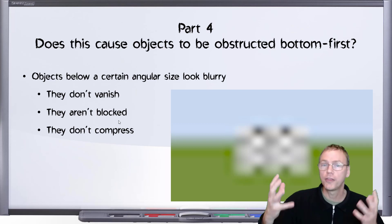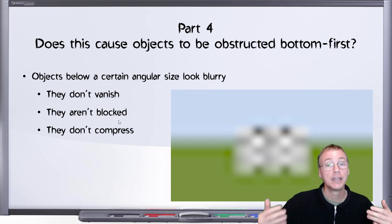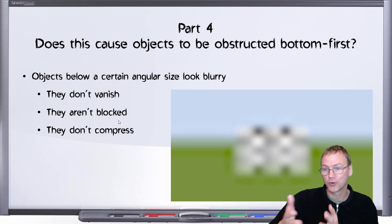They blur together with their background. If the background is a blue sky, the object will blur into the blue sky. If the background is a green field such as this, the object will blur into that green field.